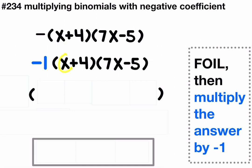x multiplied by 7x, first times first, is 7x squared. Outer, x times negative 5 is negative 5x.